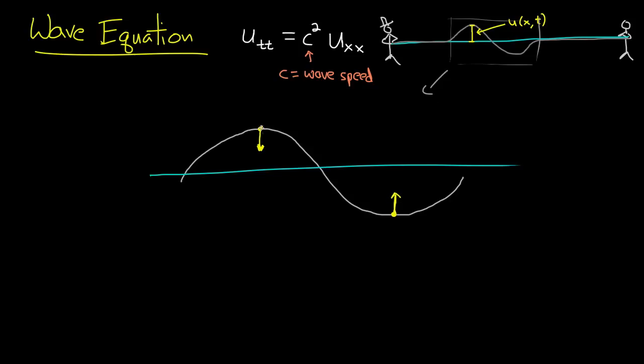Now nearby these points, I will have similar forces, but they'll be smaller in magnitude. And that's simply because the string is not quite as curved. As I move away from the peak of the mountain, or the very bottom of the valley, I have a little less curvature to the string.